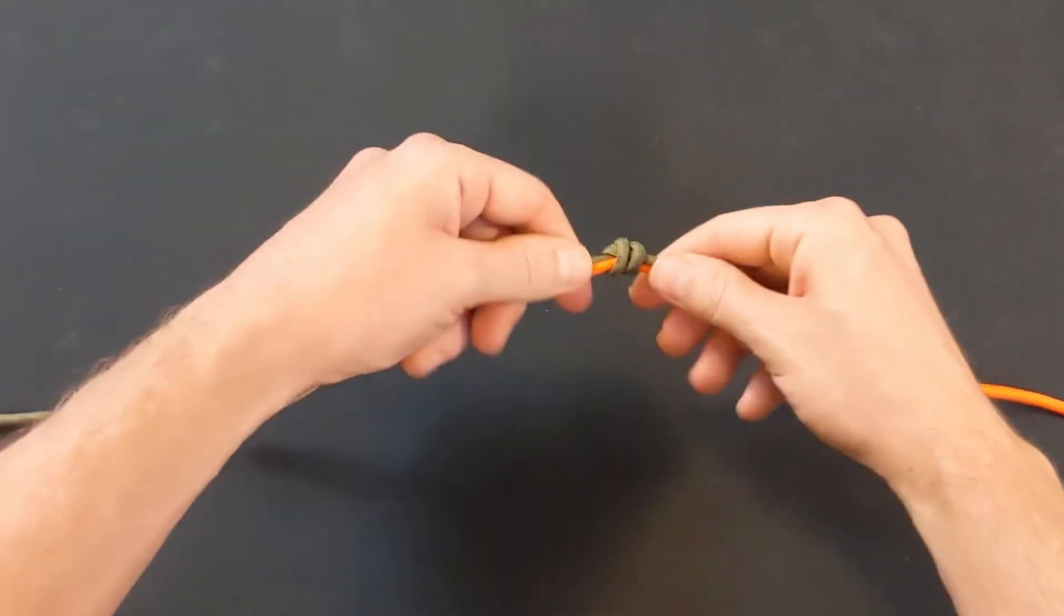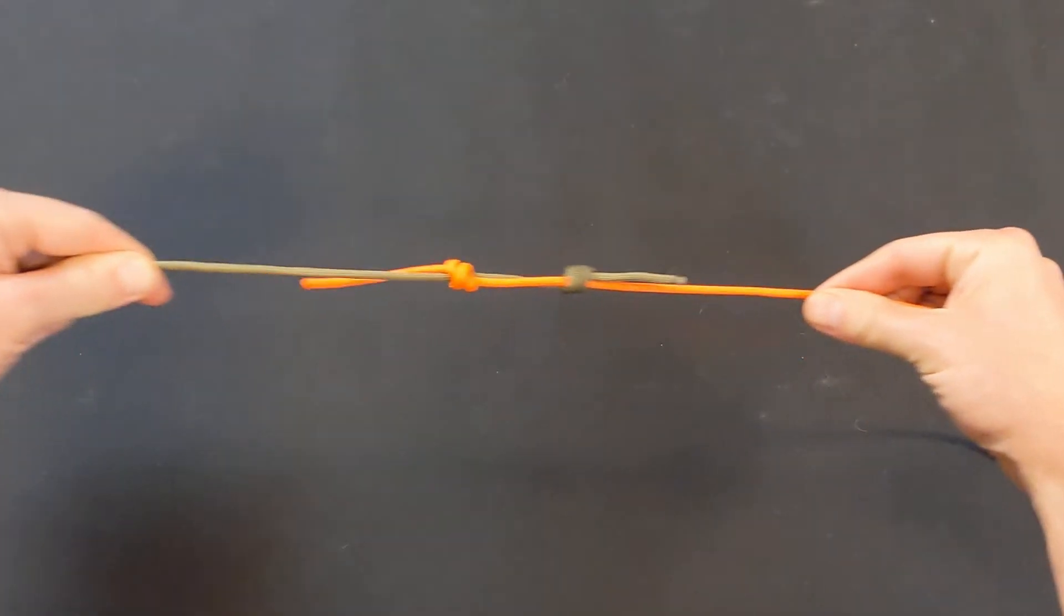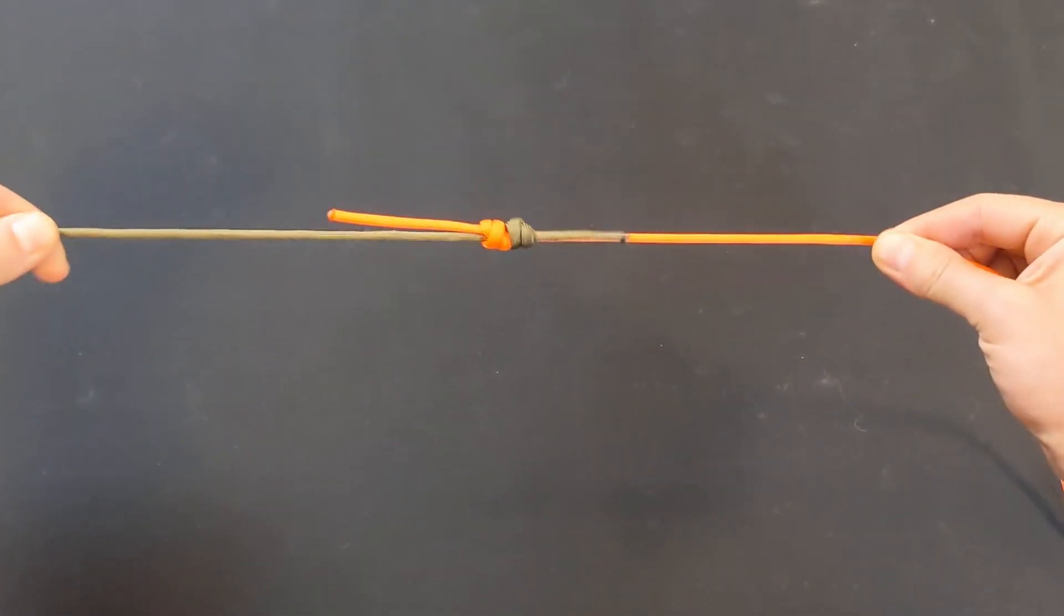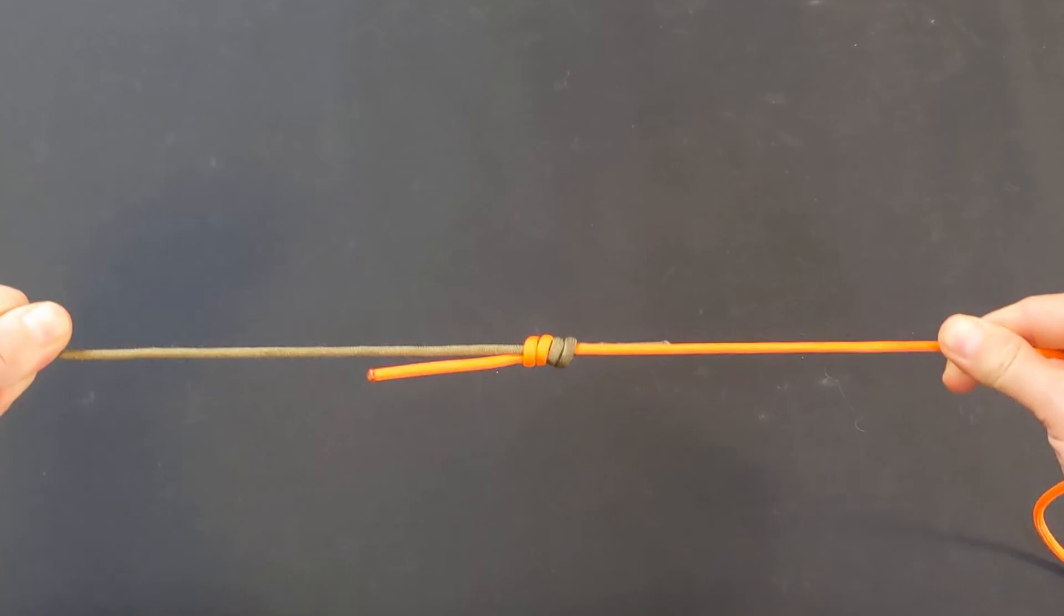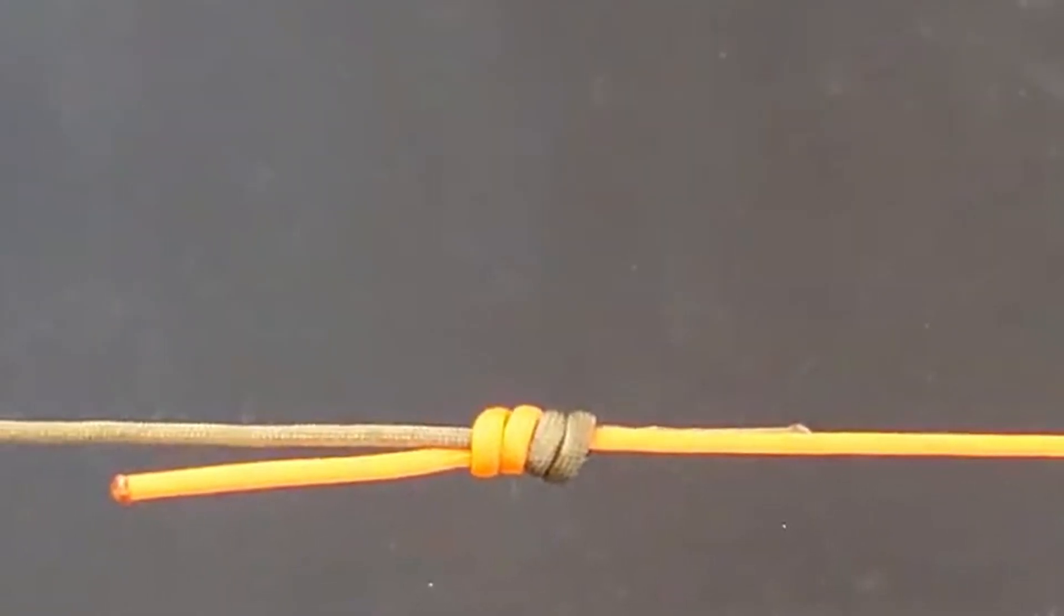Pull the lines in opposite directions and the two knots will jam into each other. You've now securely connected the two lines with a double Fisherman's Bend.